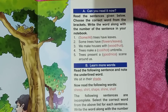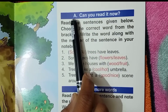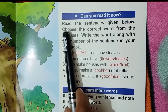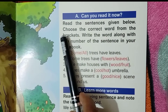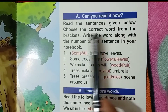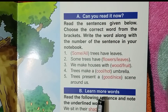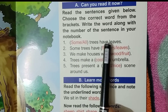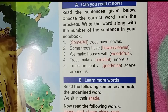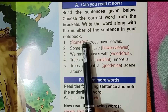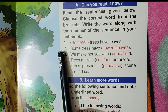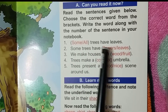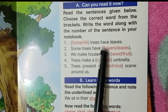Now let us see the questions. Section A: Choose the correct word from the bracket and write it in your notebook. Number 1: Some or all trees have leaves? All trees have leaves. Number 2: Some trees have flowers or leaves? Some trees have flowers. All trees have leaves, but only some trees have flowers.